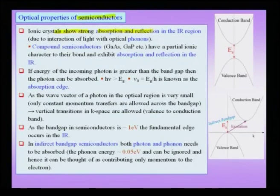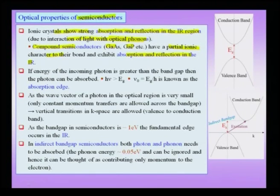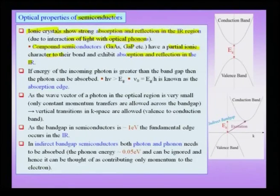Ionic crystals show strong absorption and reflection in the infrared region due to interaction of light with optical phonons — not because of plasmons, since there are no free electrons. Compound semiconductors like direct-bandgap GaAs or GaP have a partial ionic character and also exhibit absorption and reflection in the infrared due to interaction with optical phonons.